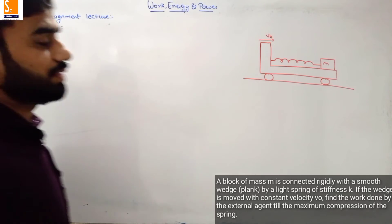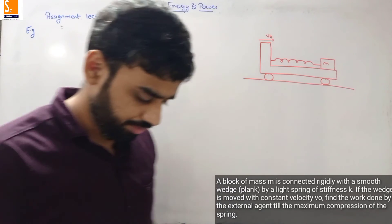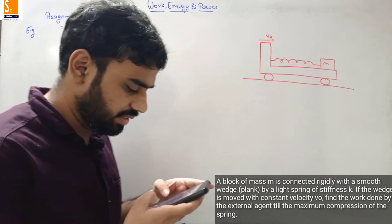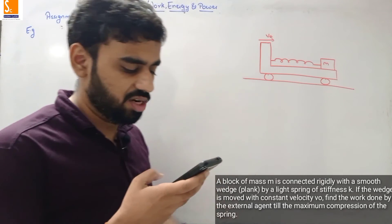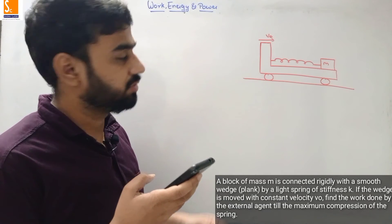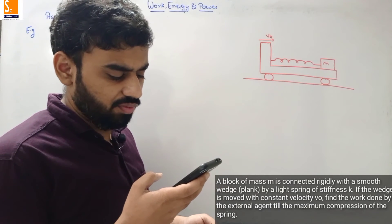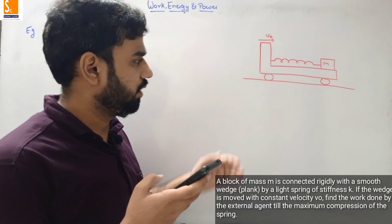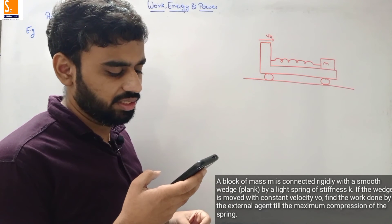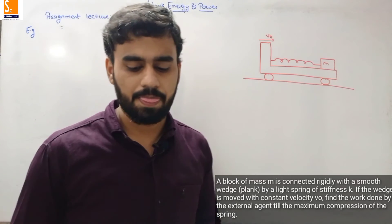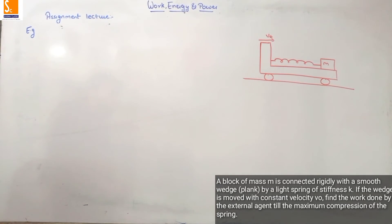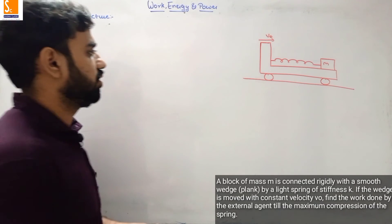Let's move to the next question — again a very interesting one. A block of mass M is connected rigidly with a smooth wedge by a light spring of stiffness K. If the wedge is moved with constant velocity V₀, find the work done by the external agent until the maximum compression of the spring.